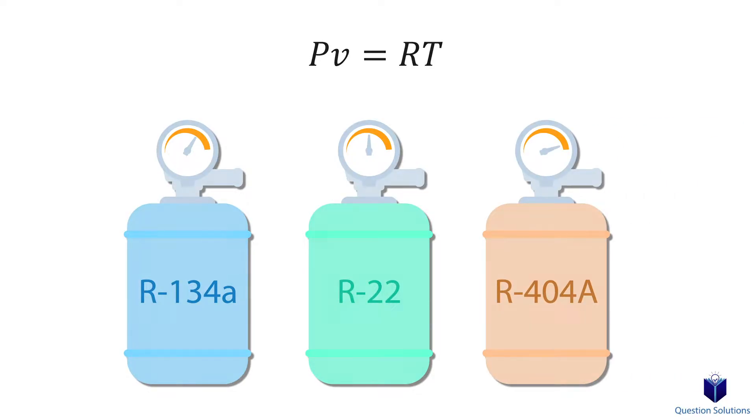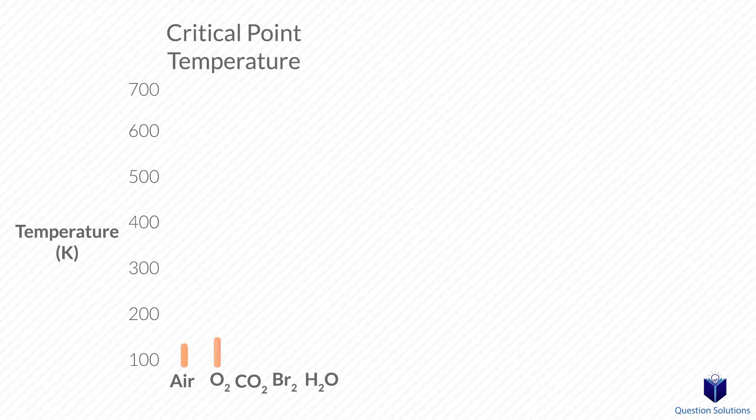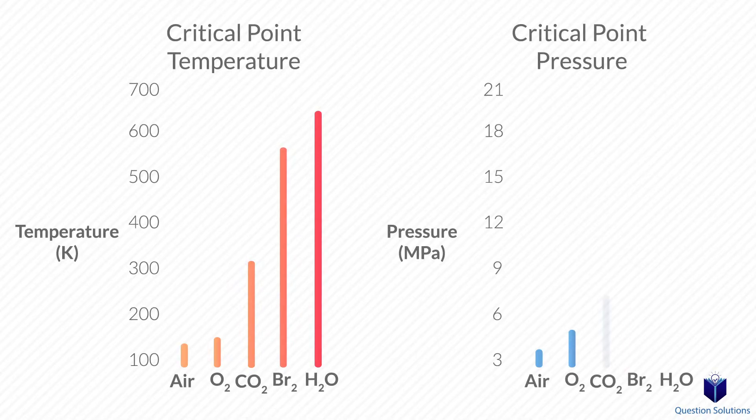Lastly, most gases will deviate from the ideal gas behavior at states near the saturation region and the critical point. Again, in those cases, we have to go back to using our property tables.